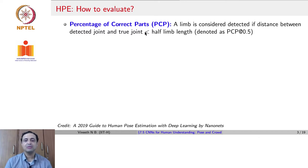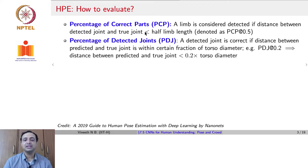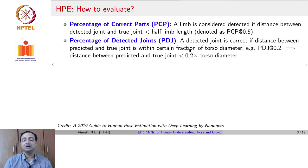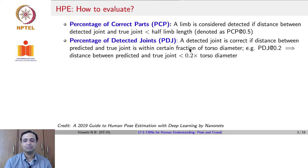A related metric is PDJ — percentage of detected joints — which states that the detected joint is correct if the distance between the predicted and the detected joint is within a certain fraction of the torso diameter. For example, PDJ at 0.2 requires the distance between the predicted and true joint to be less than 0.2 times the torso diameter of the person under consideration.